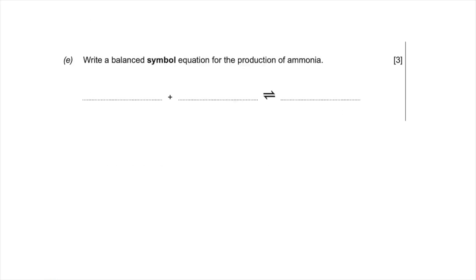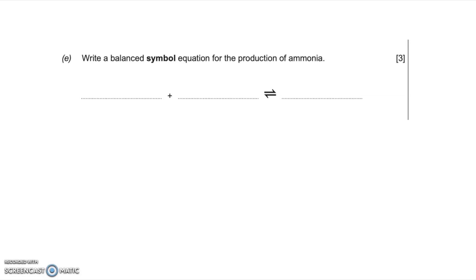Here's the final part of this question — read the question, pause the video, have a go, and then we'll go through the answer. The last part asks you to write a balanced symbol equation for the production of ammonia.